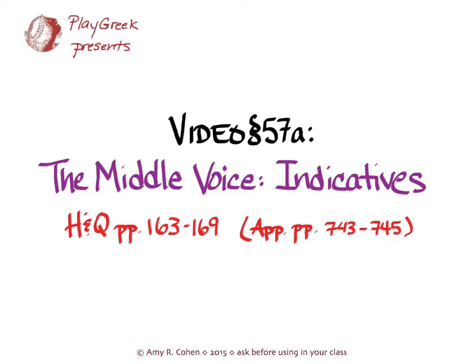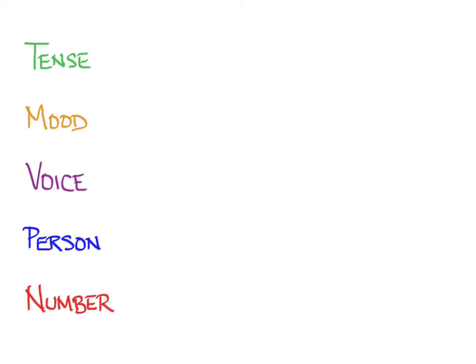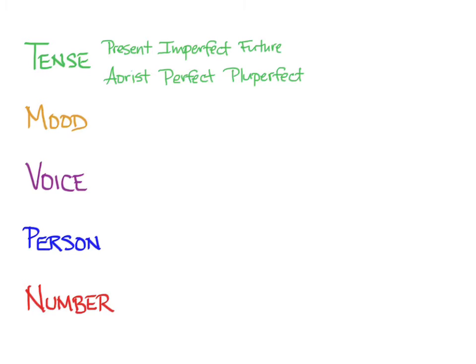When you first learned about Greek verbs back in unit 2, we talked about how we look at five things in a verb form: tense, mood, voice, person, and number. Greek regularly uses six different tenses: present, imperfect, future, aorist, perfect, and pluperfect. You've met all of those tenses in the indicative mood, and you've learned the present and aorist of the subjunctive and the optative, and we're going to save the imperative mood for unit 11.